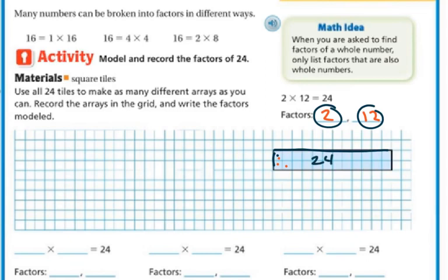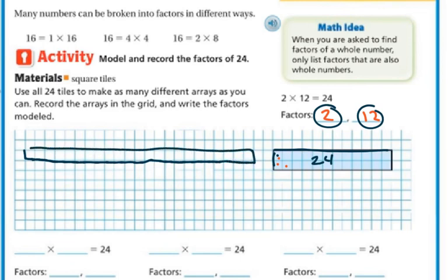Now if we're going to find all of the arrays, I would start by first doing the 1. So it's going to be 1 by 24 — one row going across all 24 tiles. So my factors are 1 and 24, because 1 times 24 equals 24. We've already done 2 times 12.